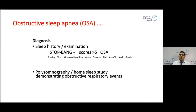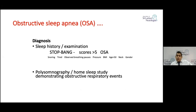To diagnose OSA, the history is very important. There is a score called the STOP-BANG score with eight questions giving an idea of the likelihood of OSA: S for snoring, T for tired, O for observed breathing pauses, P for blood pressure (high blood pressure), B for body mass index more than 35, A for age over 50, N for neck circumference more than 40 centimeters, and G for gender being male.